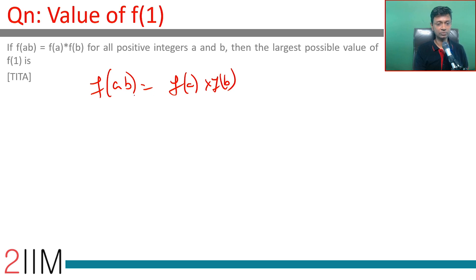That's a into b. I'm going to put b as 1. f of a into 1 is f of a into f of 1, or f of a is f of a into f of 1.